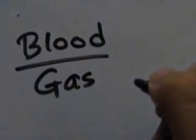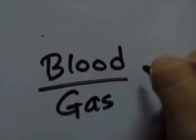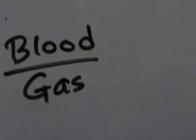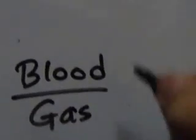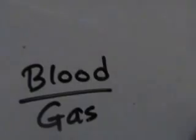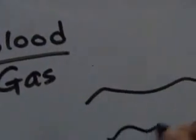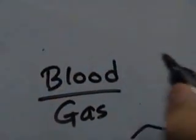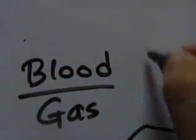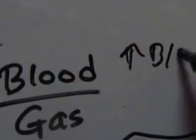The blood gas partition coefficient means how much the drug is soluble in the blood versus how much is soluble in gas — and by gas we mean the air in the alveoli. So if the anesthetic loves the blood, it will have a higher solubility in blood and therefore a high blood gas partition coefficient.